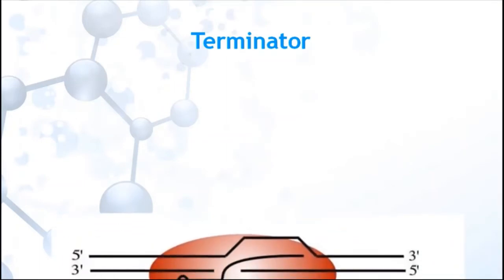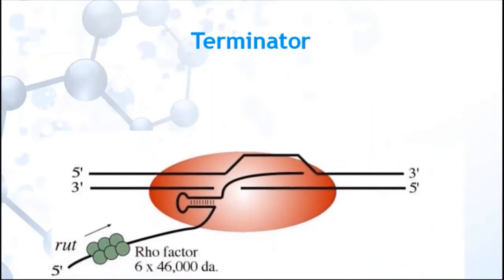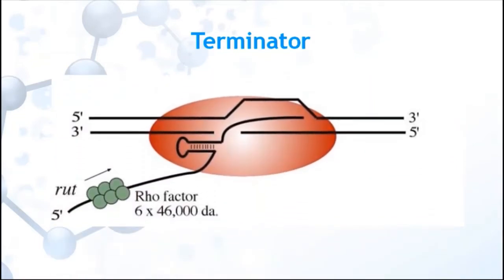The terminator sequence is the nucleotide sequence in DNA which marks the end of gene during transcription. This sequence provides signals that trigger the release of mRNA from the transcription complex.